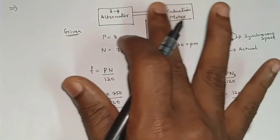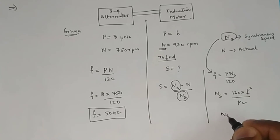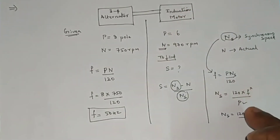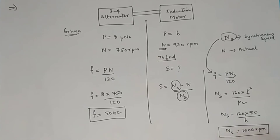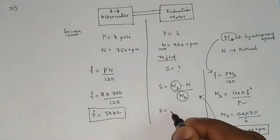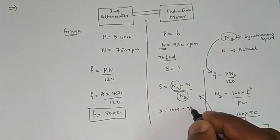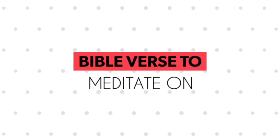Since the alternator supplies the induction motor, the supply frequency is the same for both machines. Substituting into the synchronous speed formula: Ns = 120 × 50 / 6 = 1000 rpm. Now substituting into the slip formula: slip = (1000 − 970) / 1000 = 0.03. So the slip of the induction motor is 0.03.